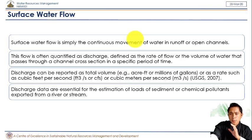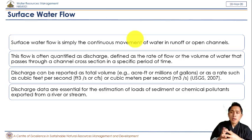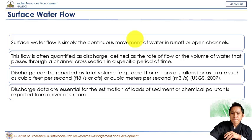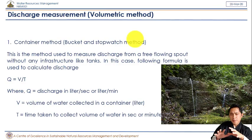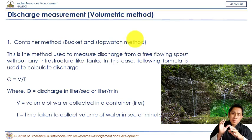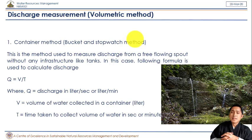The most important thing about surface water flow is that it is one of the measurement techniques that tells us what sediments and chemical components are flowing in the surface water. There are around four to five different ways to measure surface water, and these measurement methods are applicable for small streams and small rivers. For very large rivers, these methods are not applicable.